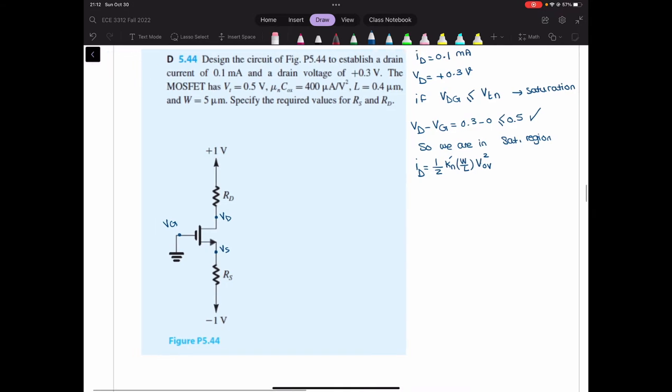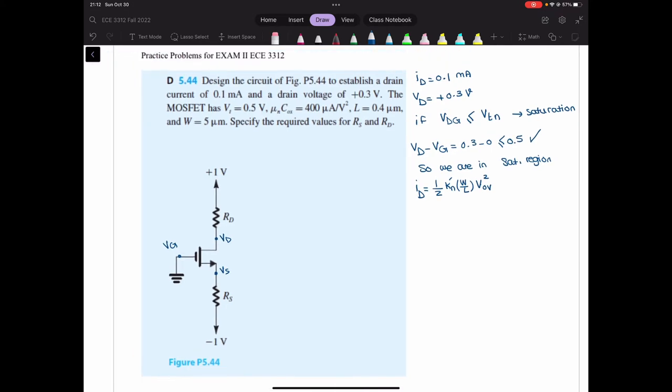The other thing is that I can find RD right away because this is ID, the current of the drain. And with writing a simple Ohm's law here, I can find RD. So RD is equal to 1 volt minus VD over ID. So that is 1 minus 0.3 over 0.1 multiplied by 10 to the negative 3 because it's milliamps. So that is equal to 7 multiplied by 10 to the power of 3 ohms, which is equal to 7 kilo ohms.